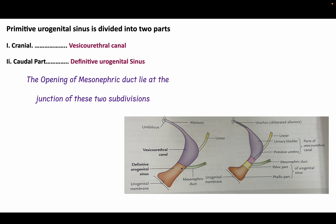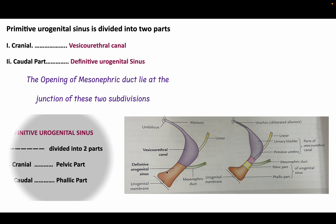The primitive urogenital sinus is divided into a cranial part, the vesicourethral canal, and a caudal portion, the definitive urogenital sinus. The opening of the mesonephric duct lies at the junction of these two subdivisions. The definitive urogenital sinus is further divided into a cranial pelvic part and a caudal phallic part.